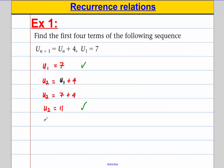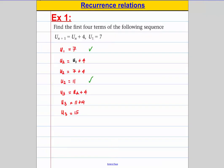Let's now work out u3. u3, the third term, must be the one before it, u2, add 4. But we know u2 is 11 from this one. So u3 must be equal to 11, add 4. And u3 must be equal to 15.